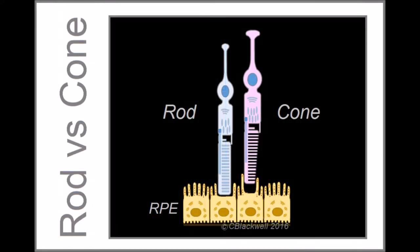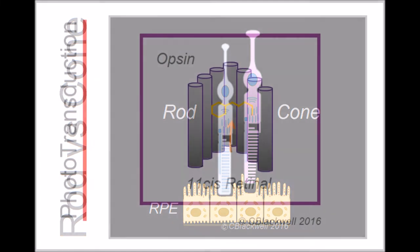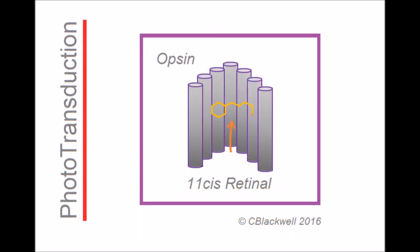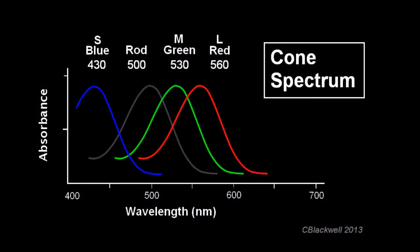While rods and cones share the same main function, sensing light, they have some significant differences. In common, both cells use retinal as the primary light-sensing molecule. The difference in wavelength sensitivity is based on slight differences in the structure of the opsin molecule holding the retinal.